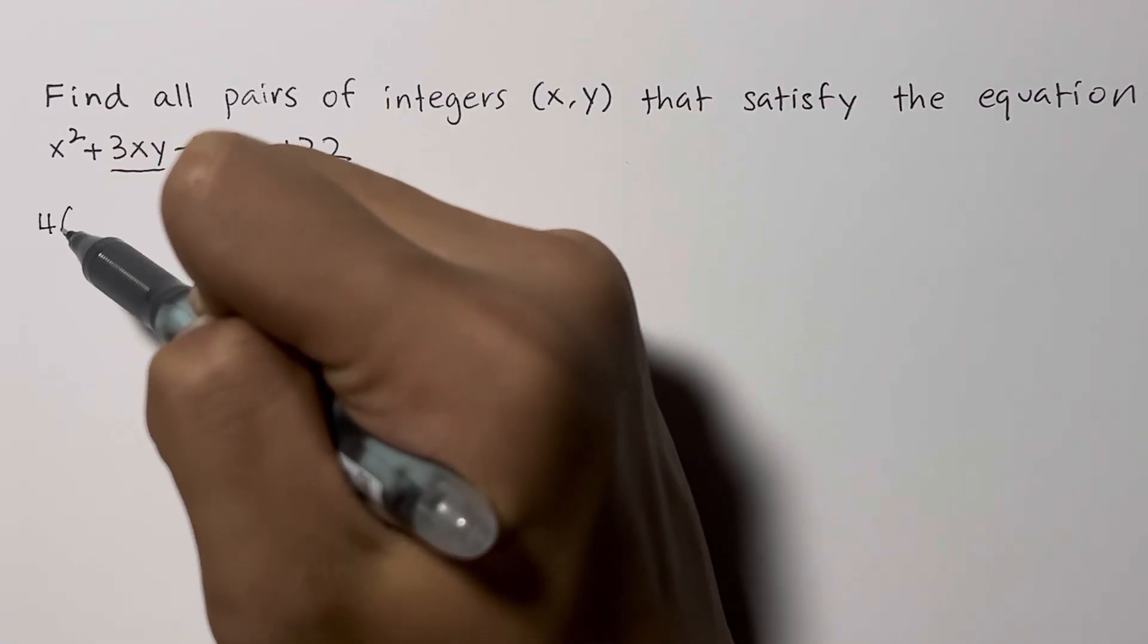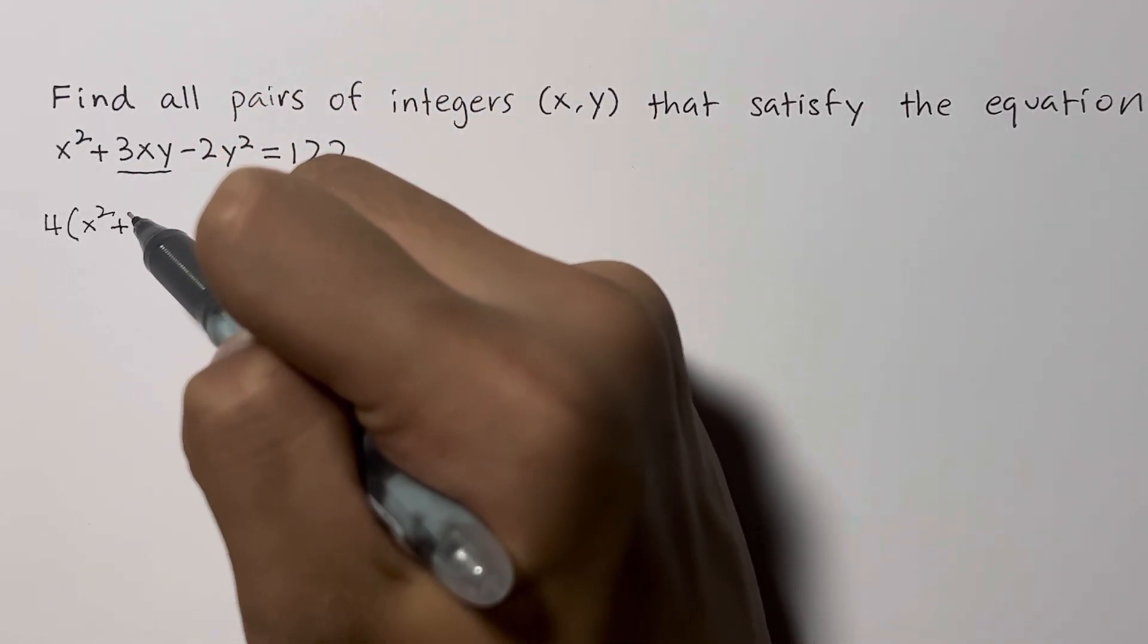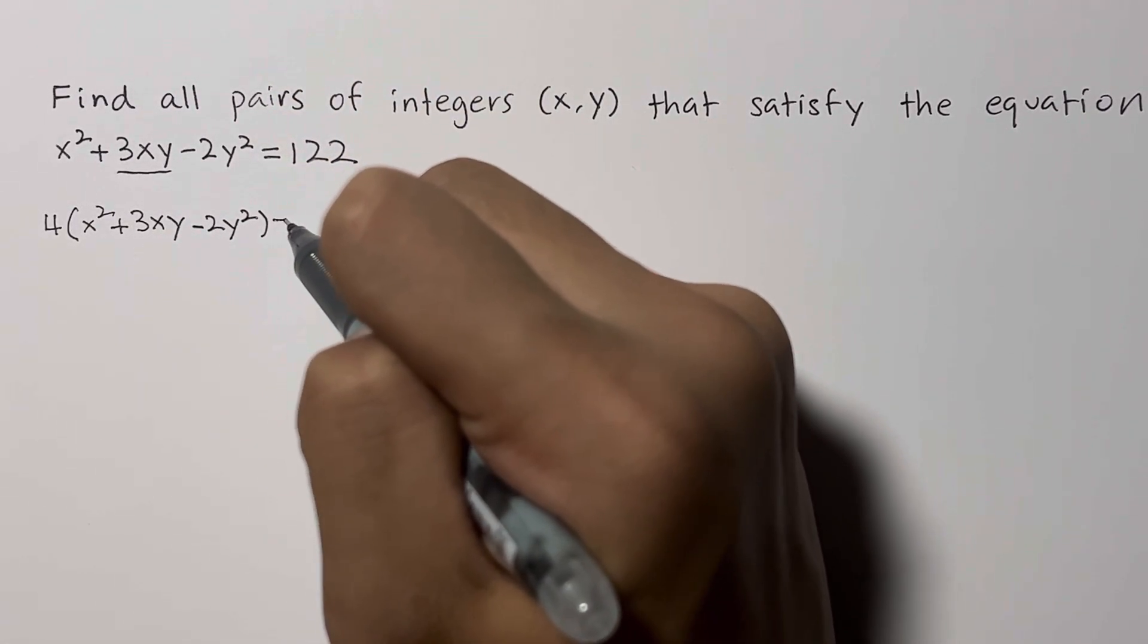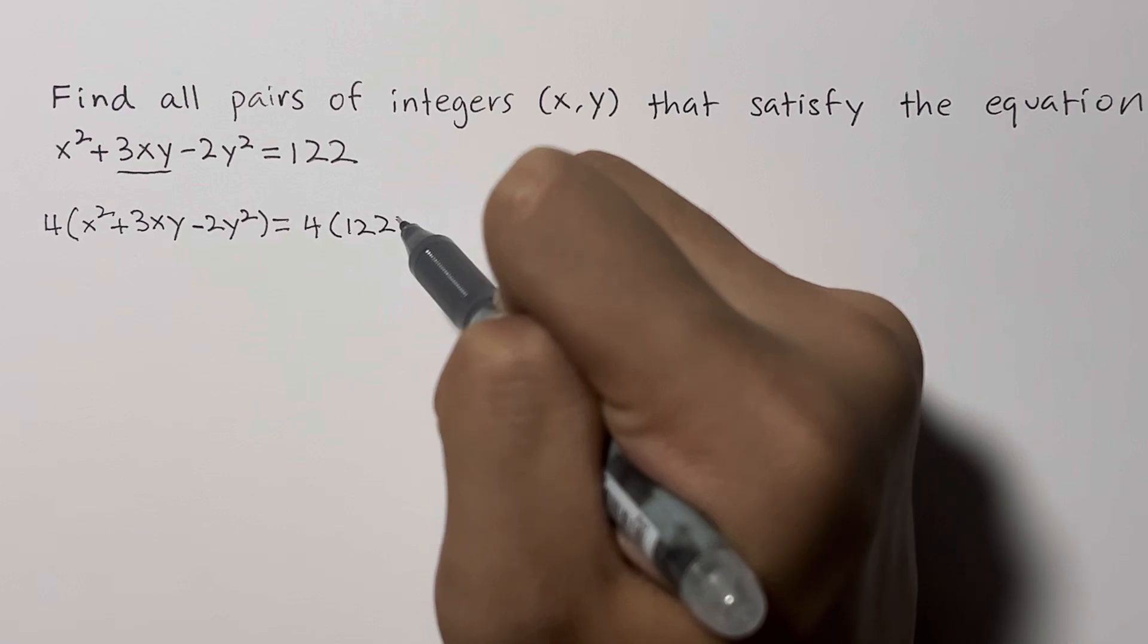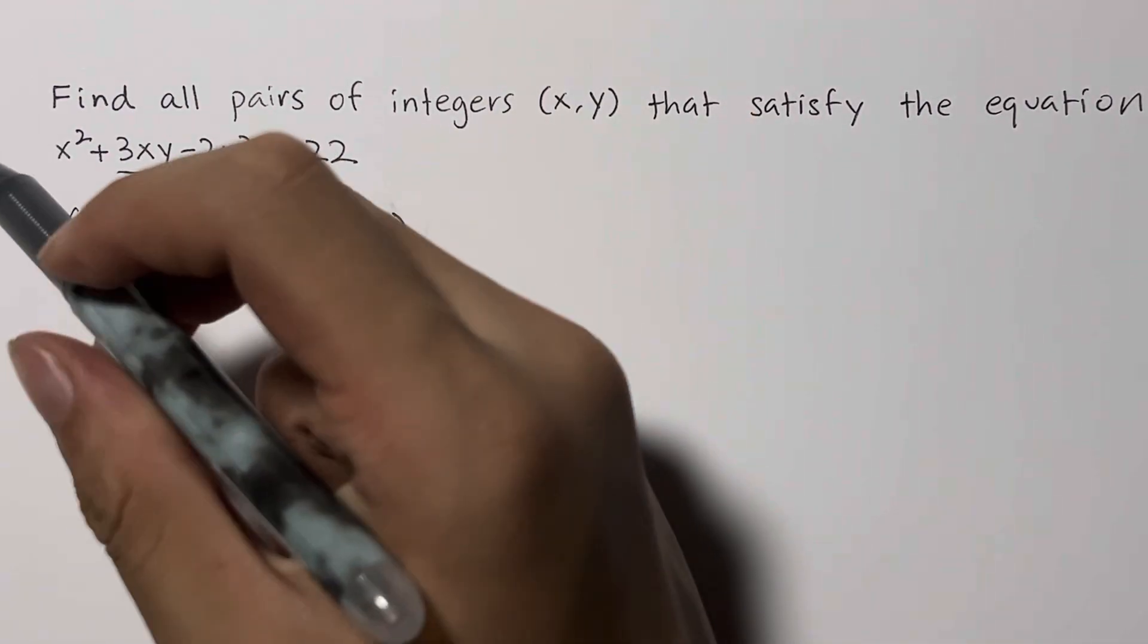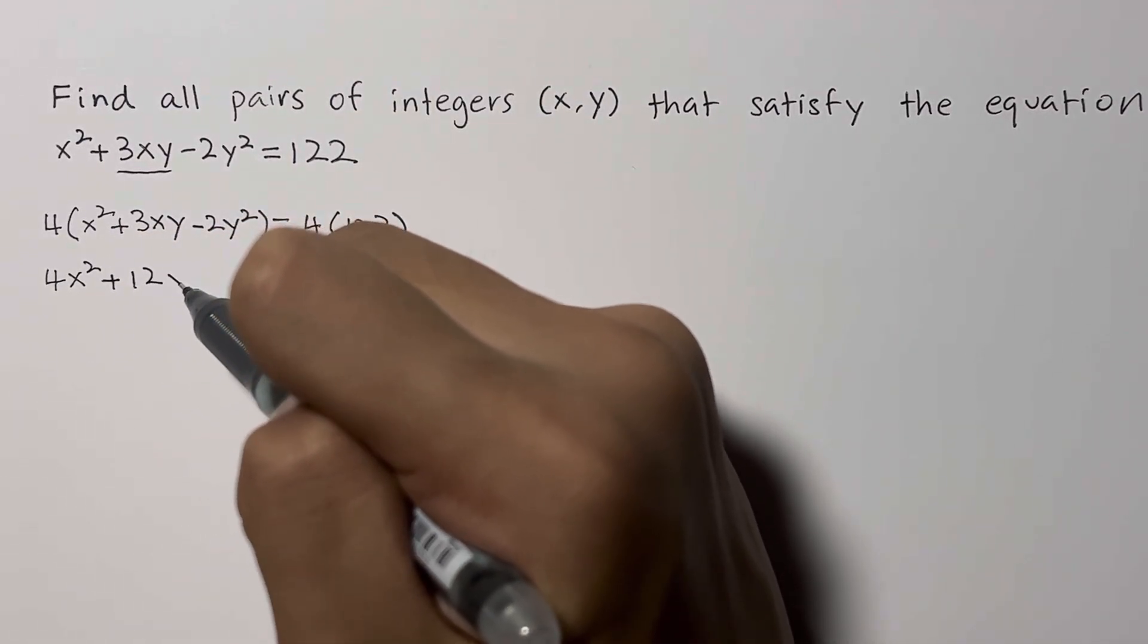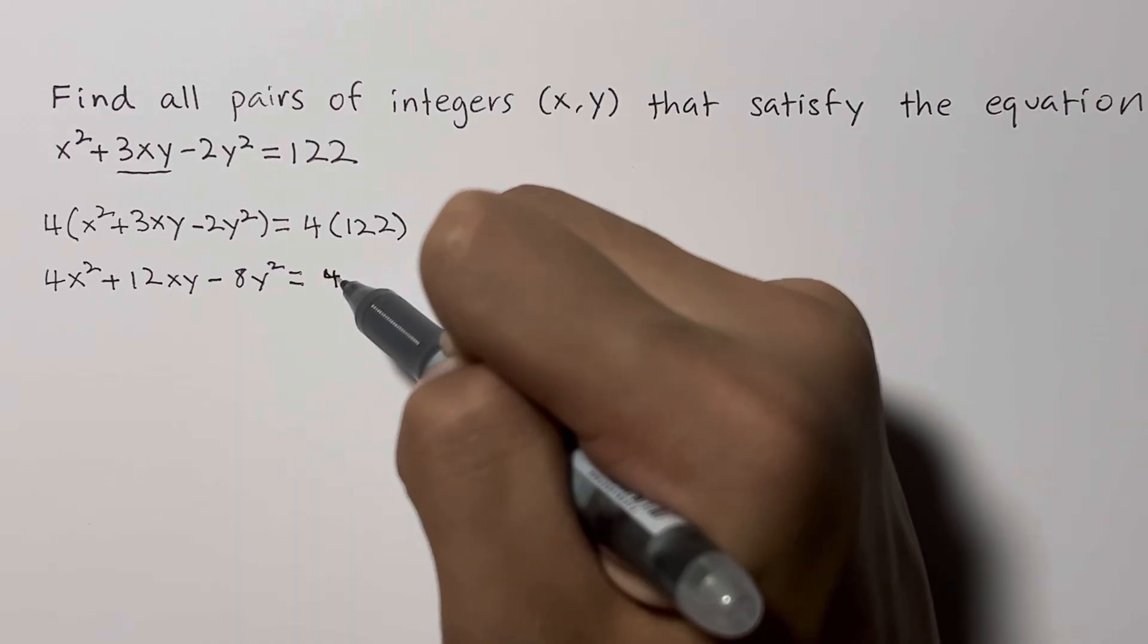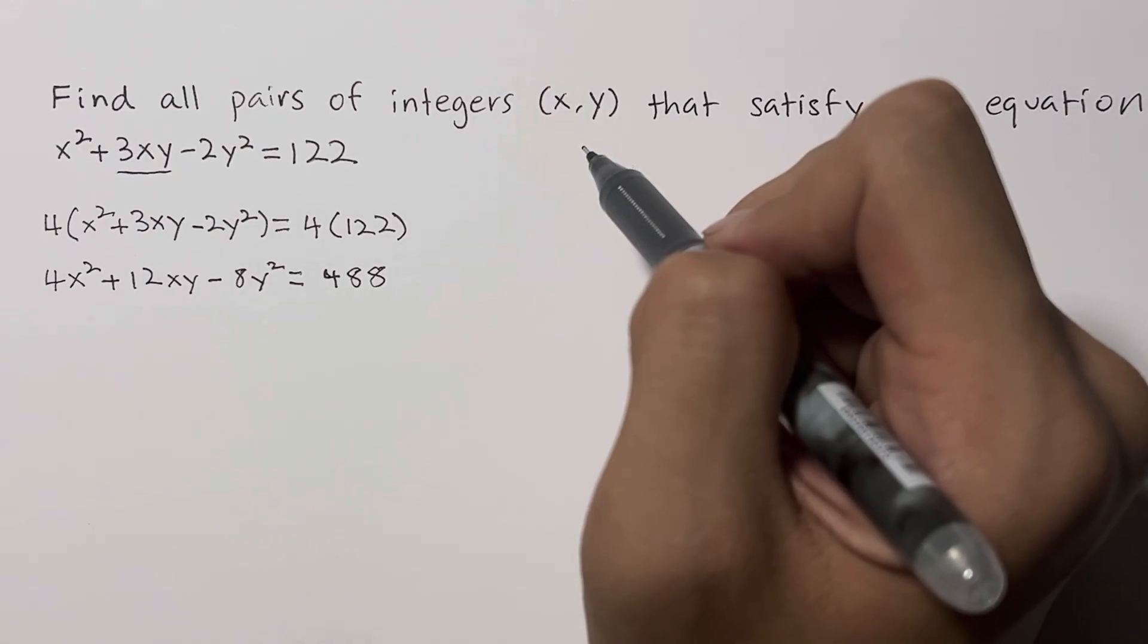4 times (x² + 3xy - 2y²) equals 4 times 122. So we'll have 4x² + 12xy - 8y² = 488. Now we can see the beginning of a perfect square involving the 4x² and 12xy terms.